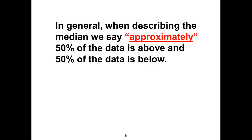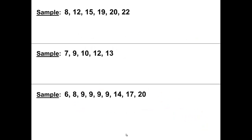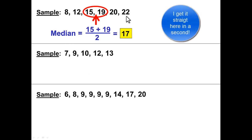In general when describing the median we say approximately 50% of the data is above and 50% of the data is below. To cover all cases, why would we say approximately instead of exactly? Well let's look quickly at these three samples and the three cases that could happen. The median of the first sample is between 15 and 19. Add those together and we get 17. That gives us a case where exactly half of the data is below 17 and exactly half of the data is above 17.